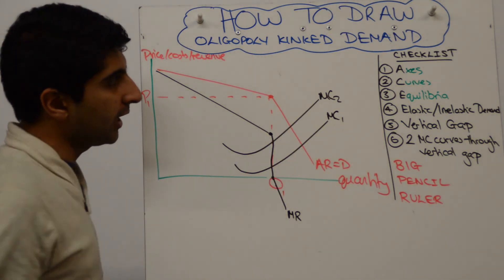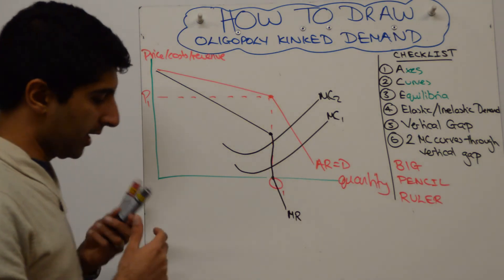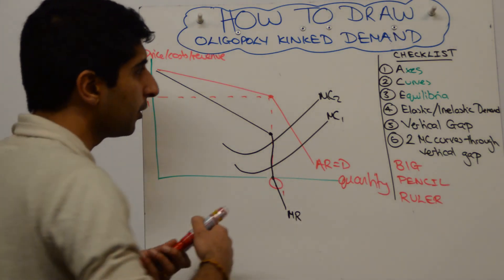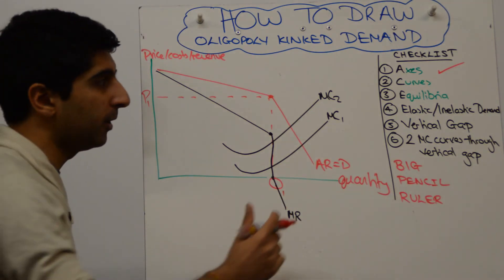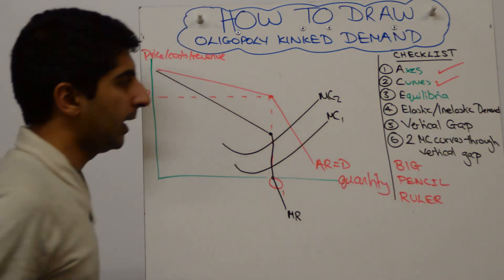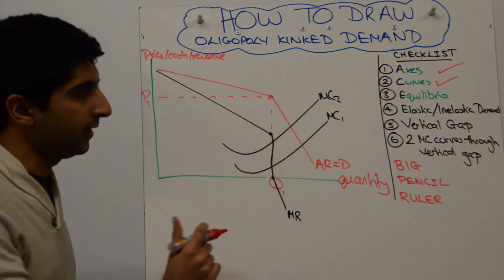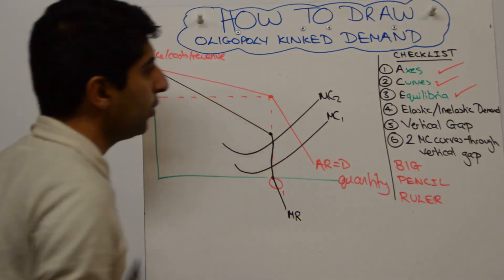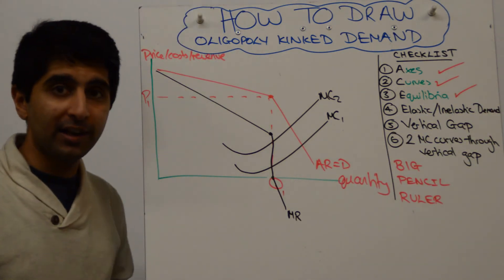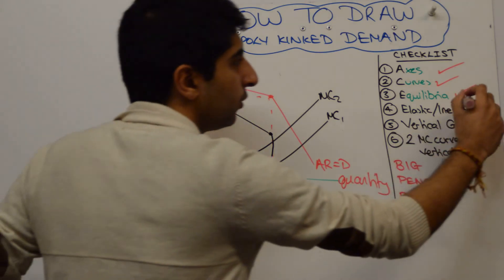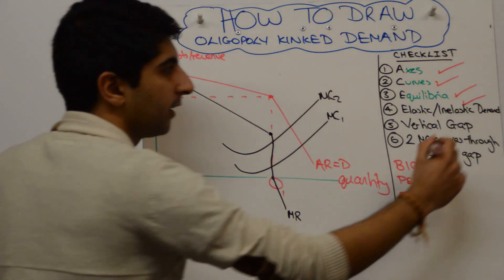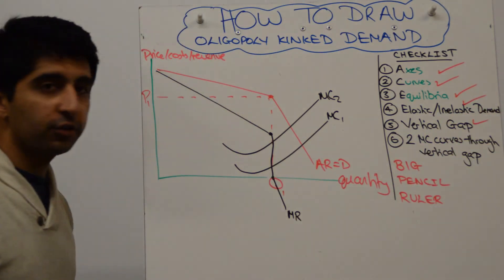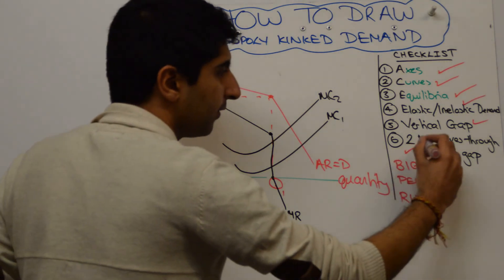So let's go through our checklist. Have we labeled our axis? Yep, we have. Have we labeled our curves? So lots of curves to label properly. We have done that. Have we labeled our equilibrium, i.e. where the kink is? Yes, we have. Have we shown an elastic and inelastic portion clearly? Yes, we have. Nicely drawn too. The vertical gap is nice and clear. The two marginal cost curves going through the vertical gap, again, is very clear. In which case we are done.